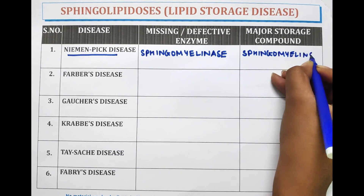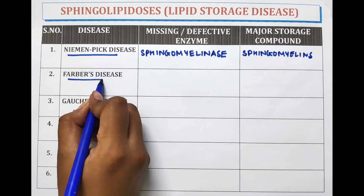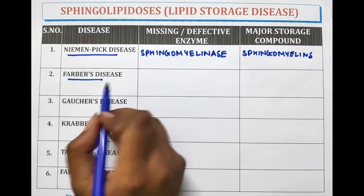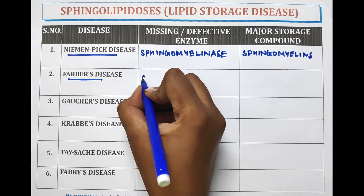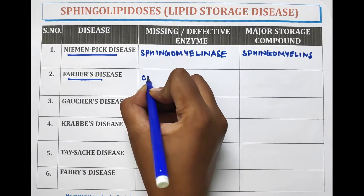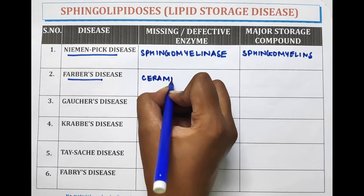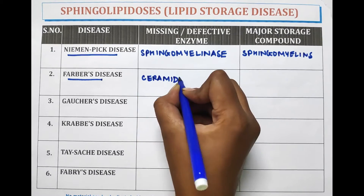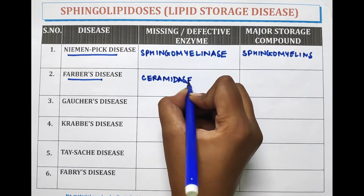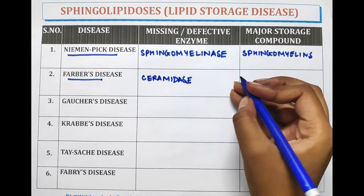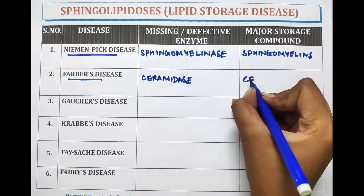The next disease is Farber's disease. The enzyme responsible for this disease is Ceramidase, and the major storage compound is Ceramide.